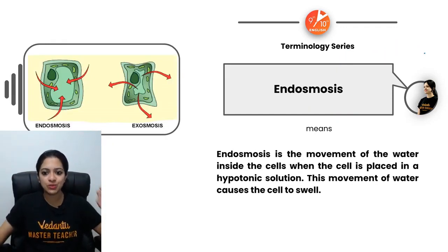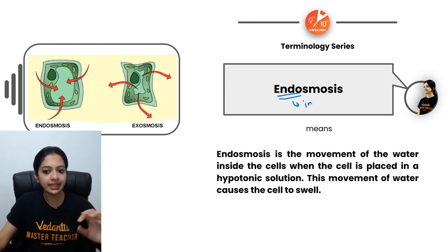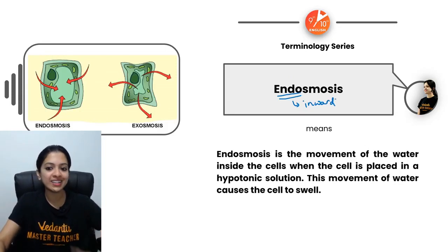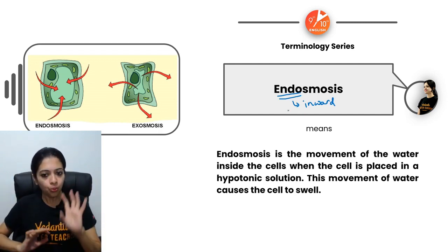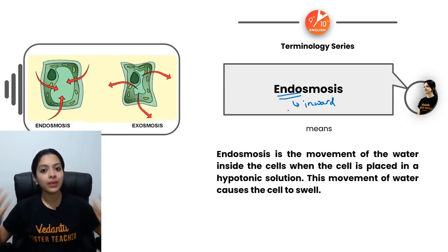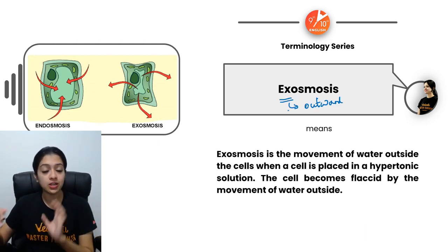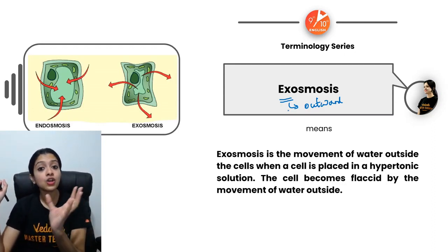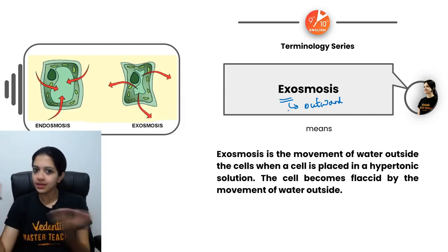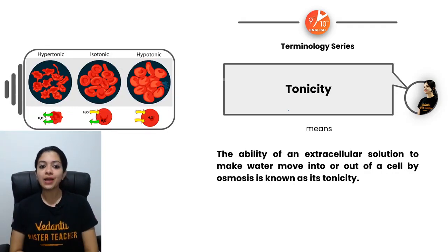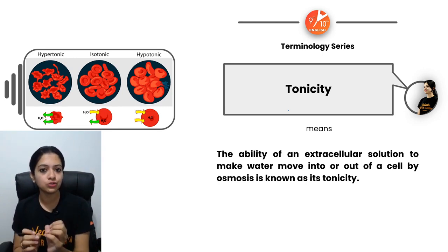Endosmosis and exosmosis — 'endo' means inward and 'exo' means outward. With respect to a plant cell, when water enters inside the cell, we describe it as endosmosis. Exosmosis is the movement of water outside the plant cell when it is placed in a concentrated or hypertonic solution. Since water moves from a dilute to a concentrated solution, water is lost from the cell, making it flaccid.